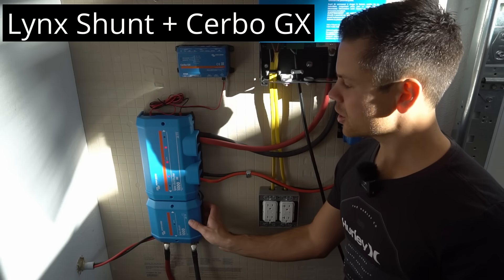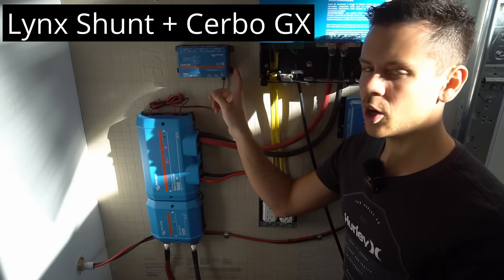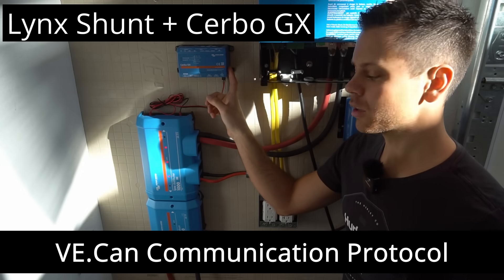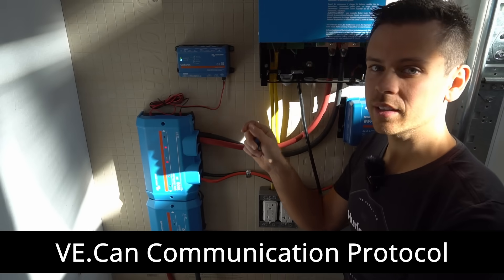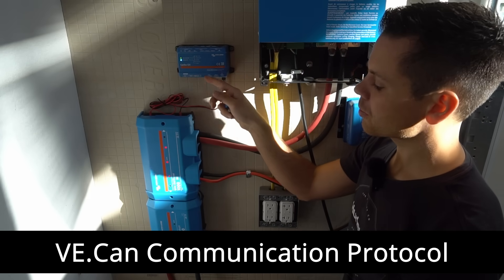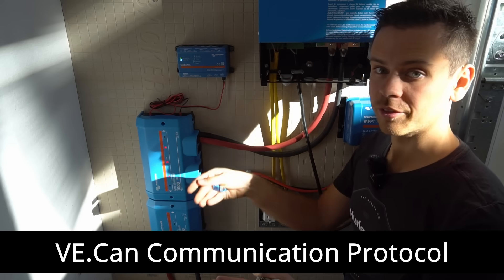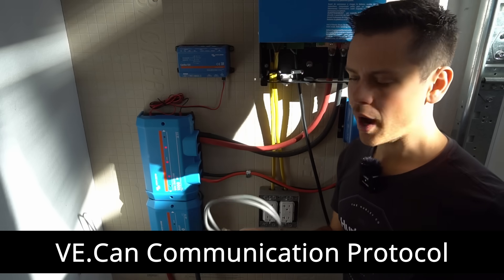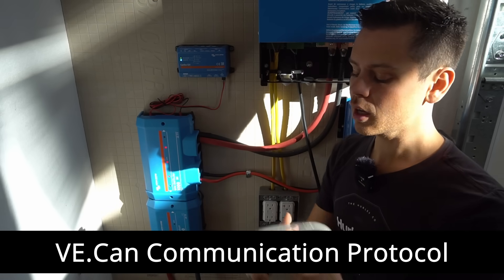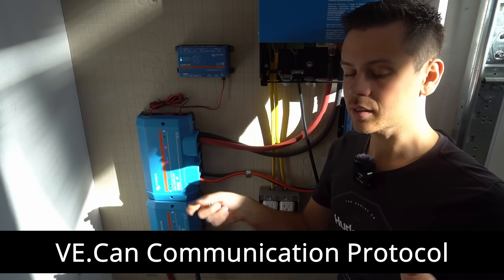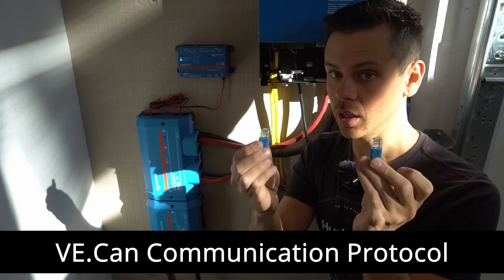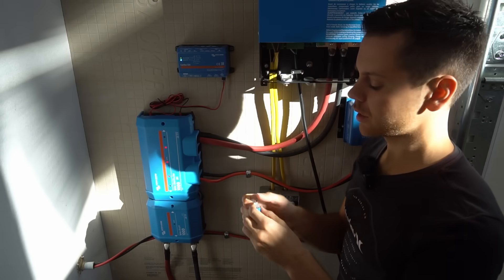Now first we're going to connect the shunt to the Cerbo GX with the VE or Victron Energy CAN communication protocol. And luckily we're only connecting two devices. You can use this VE CAN communication protocol to connect three or four or five different devices. But you need to know how to do it. Not only do you need cables to daisy link these together, but at the first and the last device you need to terminate it with these termination plugs.